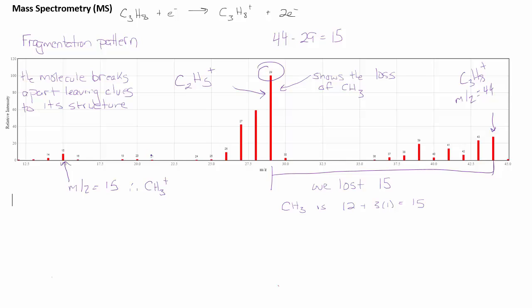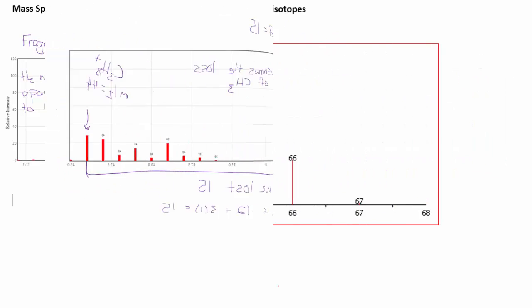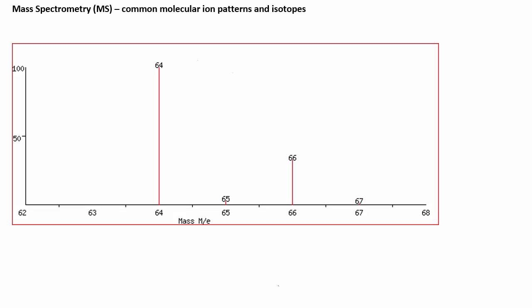So I just highlighted there that M over Z signal at 15, that's actually the methyl radical, so that's also another common loss pattern. And the final aspect of what we should look at here would be common molecular ion patterns. These are indicative of isotopes present in the mix.